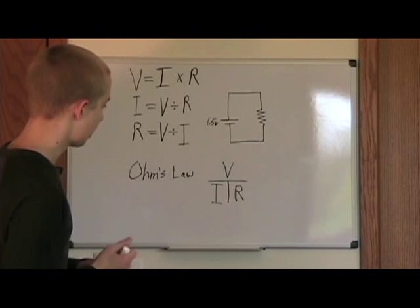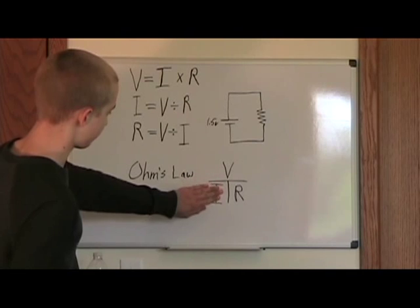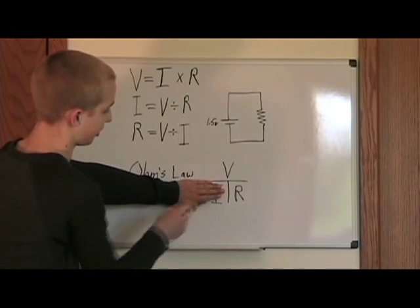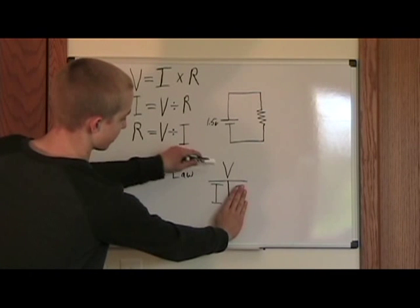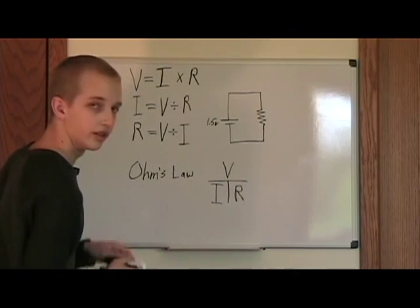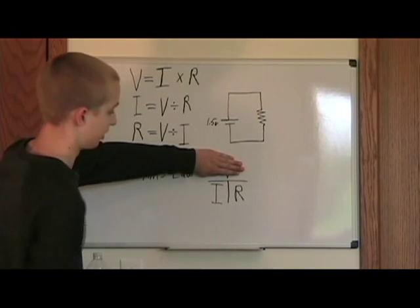And to use it, say you want to find current, you cover up I, and then it's voltage divided by resistance. If you want to find resistance, you cover up R, and it's voltage divided by current. If you want to find voltage, you cover V, and you get current times resistance.